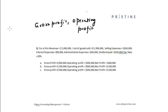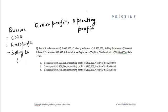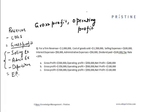Now if you look at the income statement, revenue minus cost of goods sold gives gross profit. When I subtract selling expenses, administrative expenses, and depreciation from the gross profit, I arrive at the operating profit, that is EBIT — Earnings Before Interest and Tax. Thereafter I subtract interest to get profit before tax, then subtract tax to get net income.